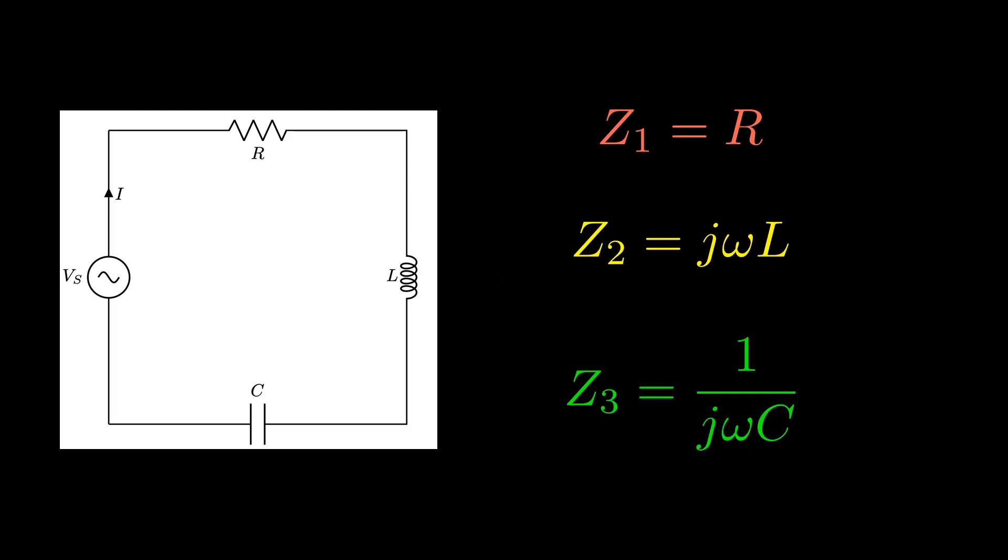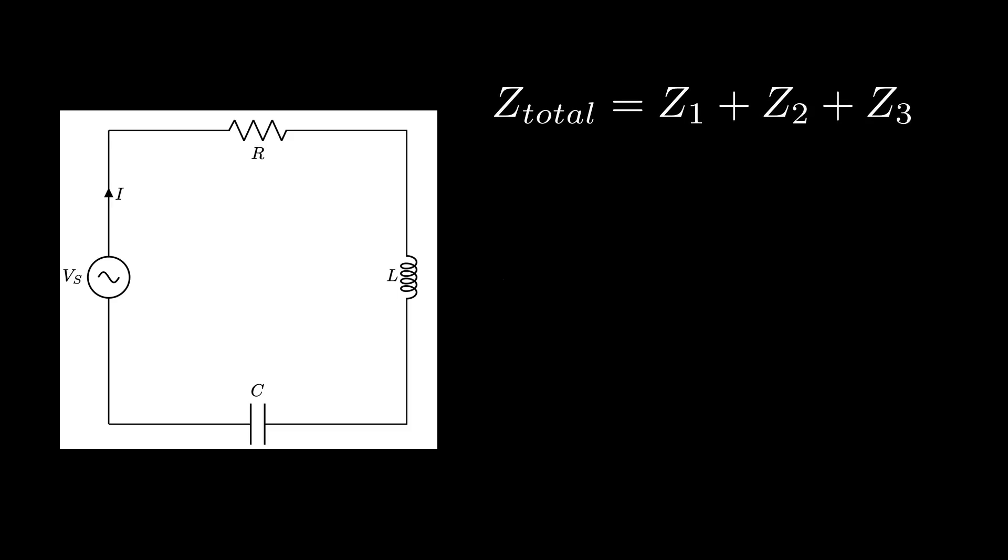We can calculate the total impedance by adding Z1, Z2, and Z3 together. If we want to solve for current, all we have to do is plug our expressions into this equation in order to find our alternating current. Although the algebra may be tough, this method can be easier than solving systems of differential equations.